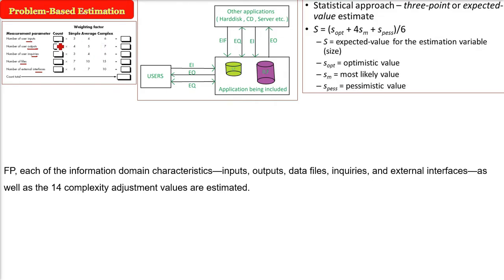We will put the counts here: number of inputs, outputs, inquiries, files and interfaces, multiply with the column. Take simple or average or complex, then we multiply them and find the final count.